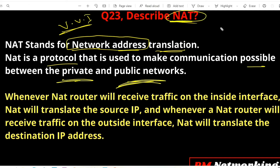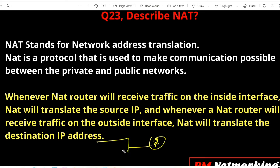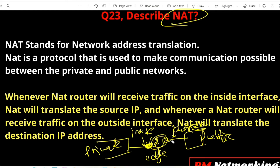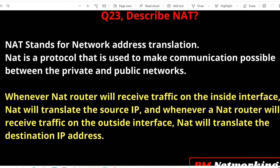We run NAT on our edge router. An edge router has one interface connected to the LAN — the private network — and one interface connected to the public network. The LAN-side interface is called the inside interface, and the public-side interface is called the outside interface. Whenever the NAT router receives traffic on the inside interface, it translates the source IP. Whenever it receives traffic on the outside interface, it translates the destination IP.